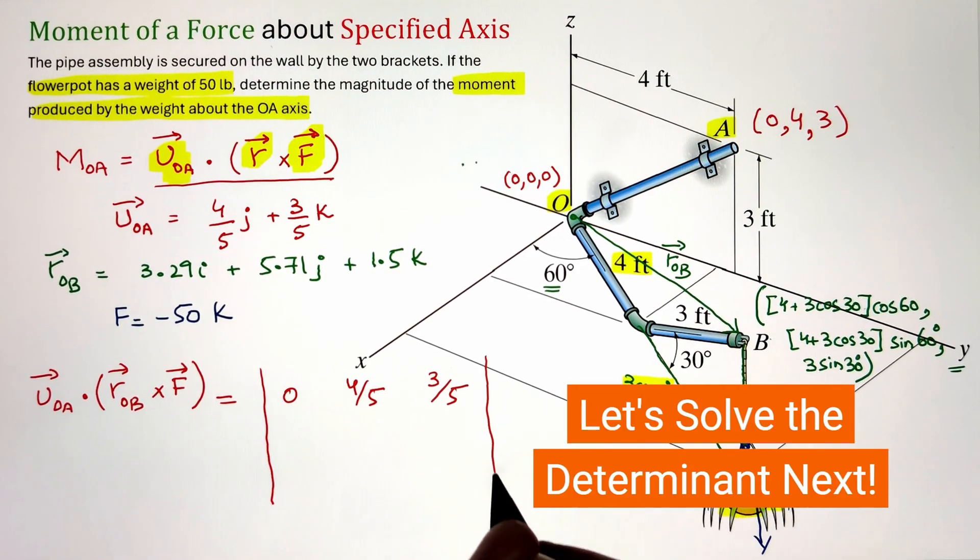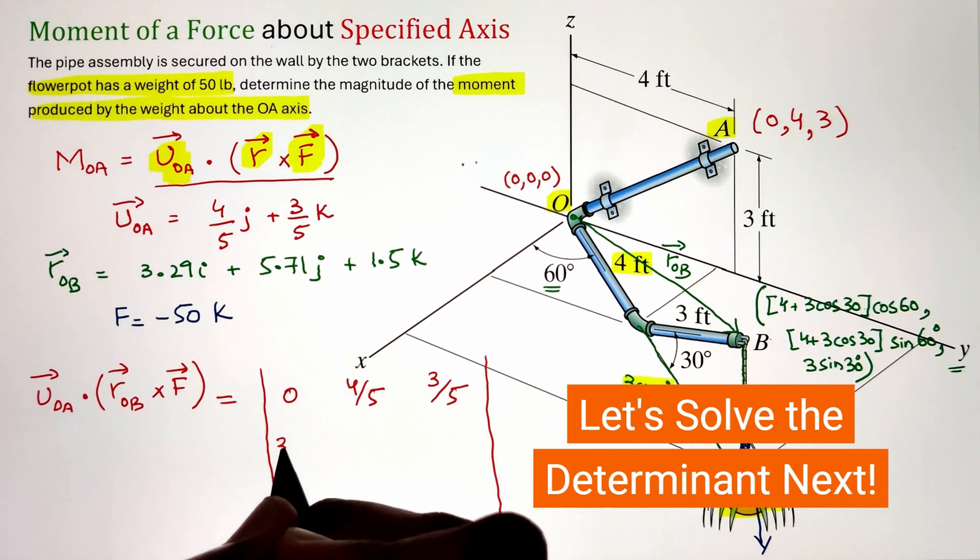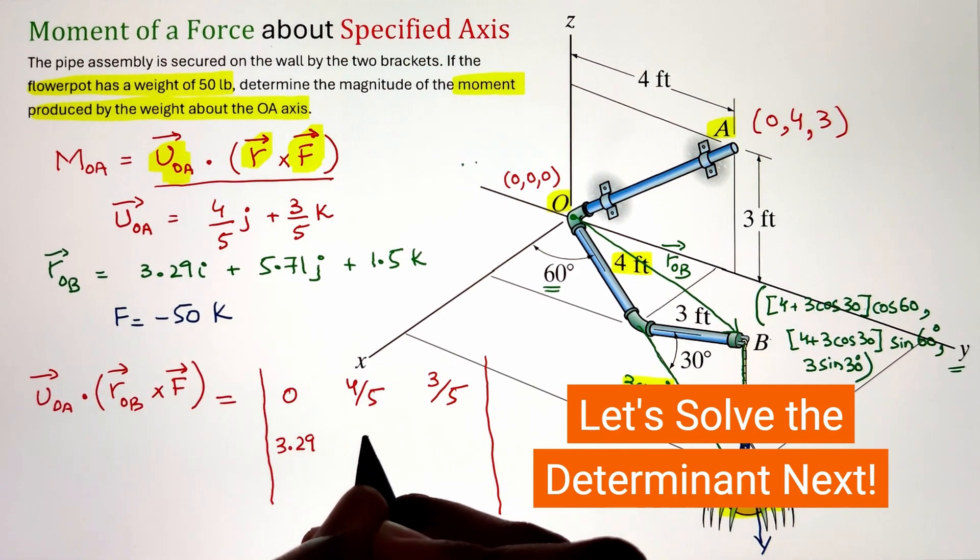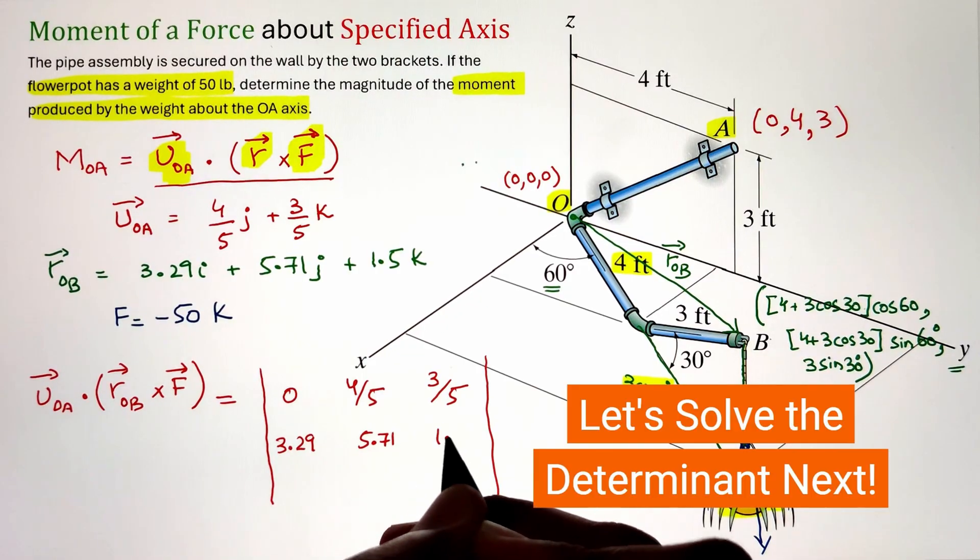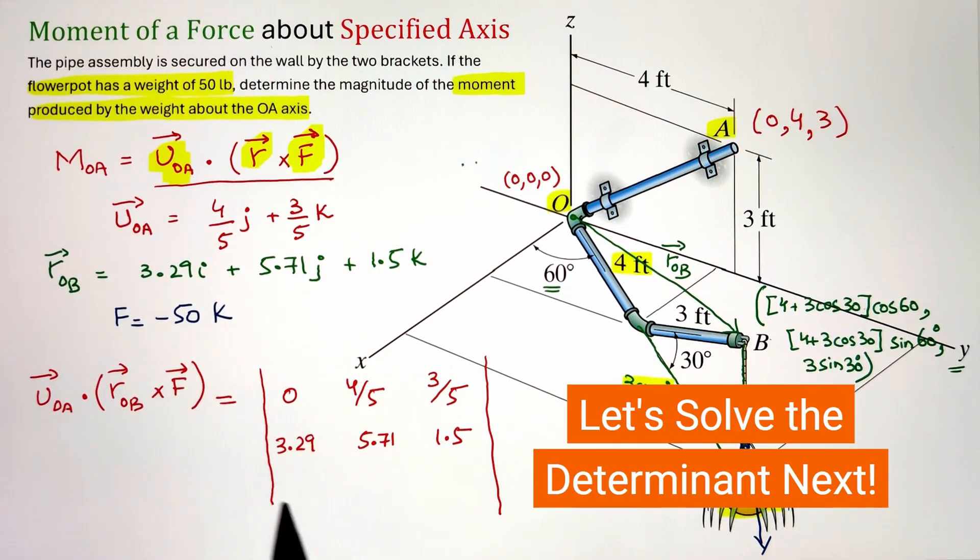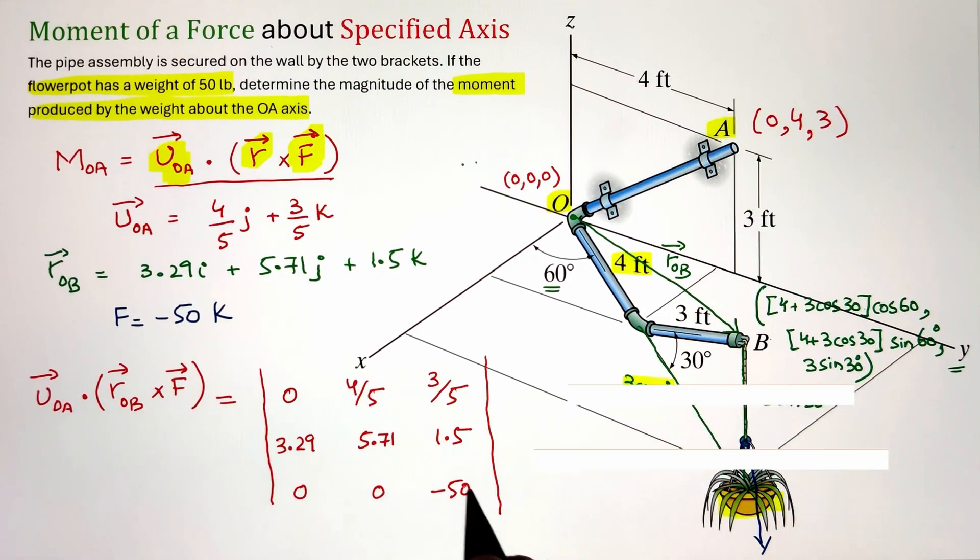And finally I have my third row, that is the force vector. Since it's only acting along the negative Z direction, I only have my final term as negative 50 in the third row. Next let's solve this determinant since the very first term is 0.